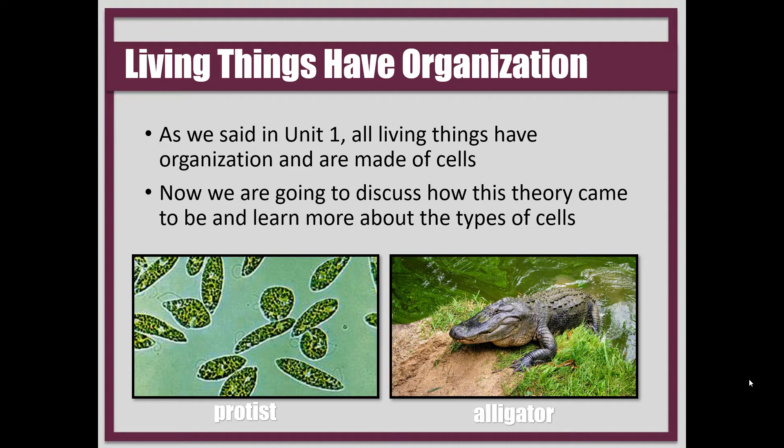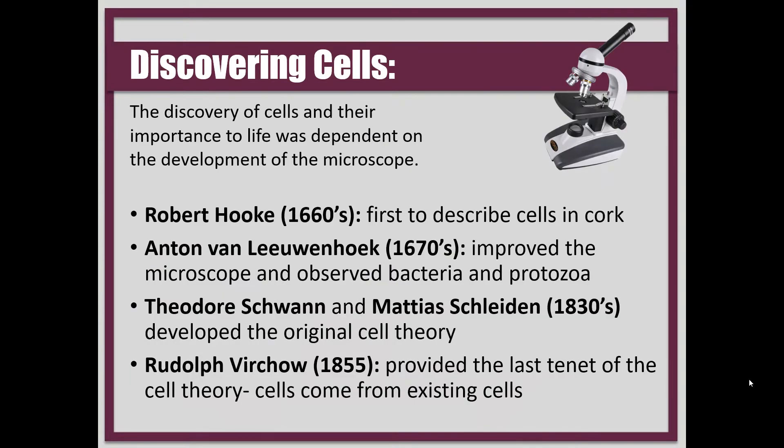What we're going to do today is discuss how this idea came to be. I'm going to introduce you to something called the cell theory. We're going to learn about the scientists who helped develop the cell theory, and it all started with the invention of the microscope. When the microscope was invented, lots of scientists went out and used it. This was a primitive microscope — it doesn't look anything like what we know of as the microscope today, but this piece of equipment helped scientists learn more about cells.